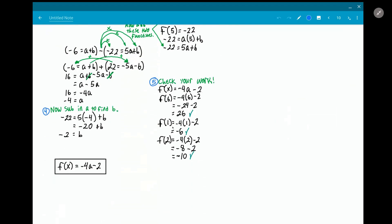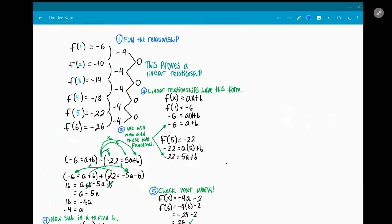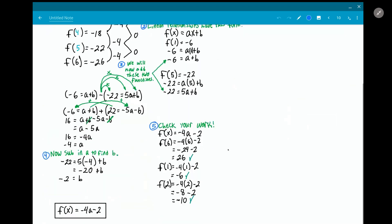We get f(6) = -26, that works out. f(1) is equal to -6, that works out. f(2) is equal to -10, that works out. And so we can be pretty sure that we have the right relationship, and that's how you would do it.